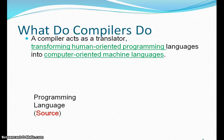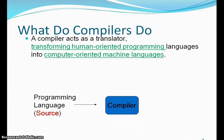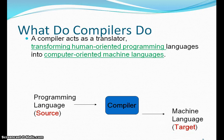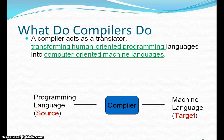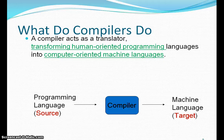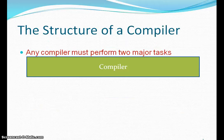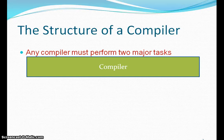The structure is like this: the input is a programming language, that is the source code. The compiler processes that source code, which is written in a higher level language, and converts it into machine-understandable language, that is known as the target code. This complete conversion process from higher level language to machine language is performed in a number of components, which we call the phases of compiler.